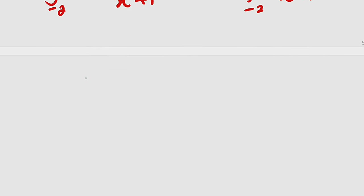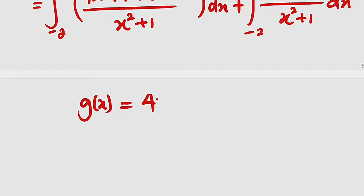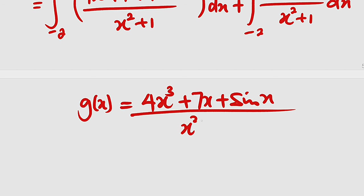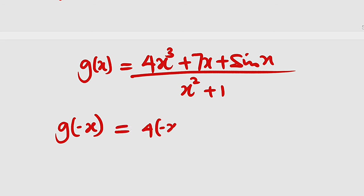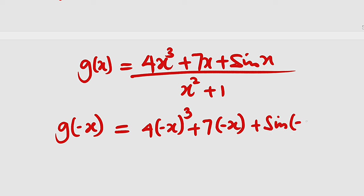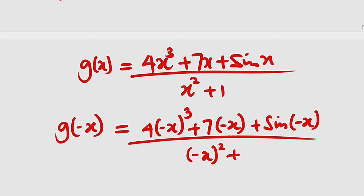So let us test. Let g(x) = 4x³ + 7x + sin(x), all divided by x² + 1. Plugging in negative x instead of x, g(negative x) = 4(−x)³ + 7(−x) + sin(−x), divided by (−x)² + 1.